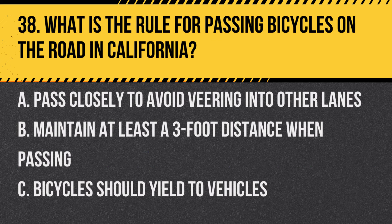Question 38: What is the rule for passing bicycles on the road in California? A. Pass closely to avoid veering into other lanes. B. Maintain at least a three-foot distance when passing. C. Bicycles should yield to vehicles. Answer: B. Maintain at least a three-foot distance when passing. When passing bicycles on the road, you should maintain at least a three-foot distance from them.